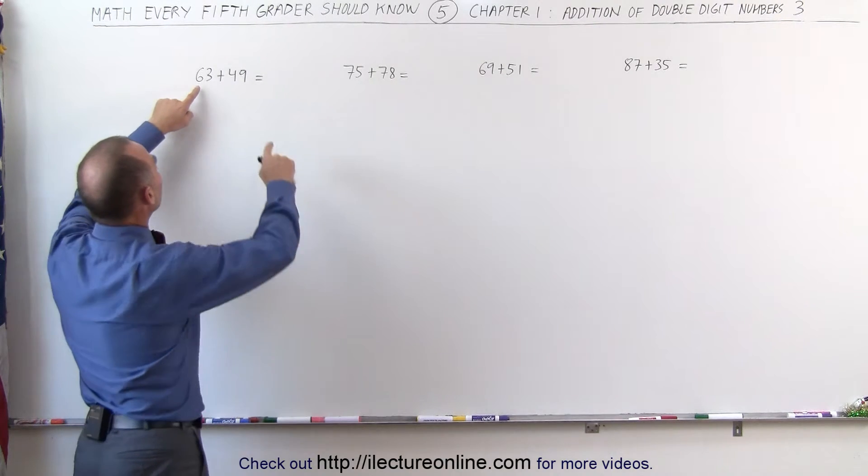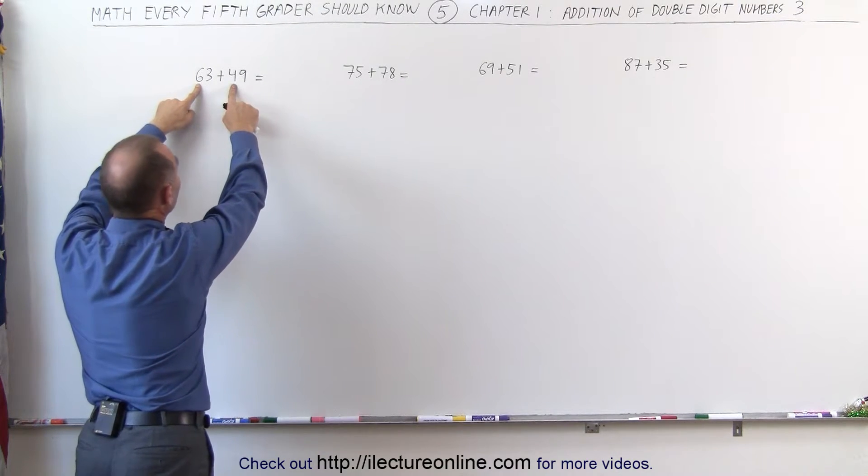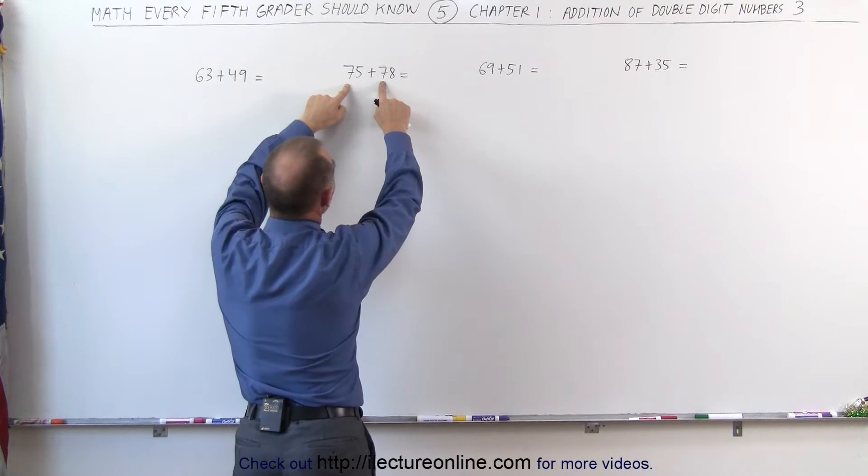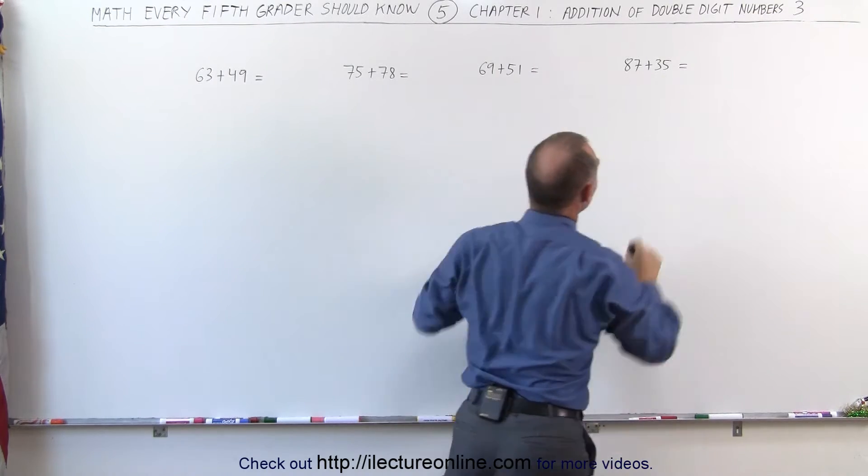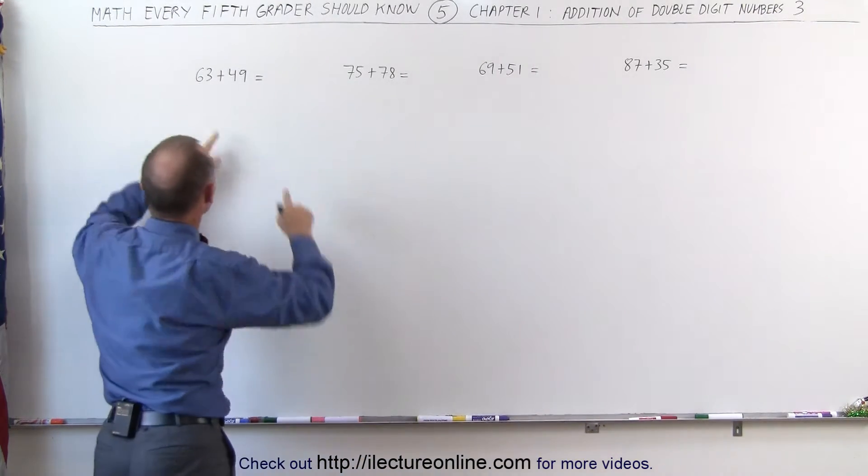In this case, notice that if we add the first two numbers together, it adds up to 10 or more. The first two numbers together here add up to 10 or more. Same over here and same over here. And in the same way, when we add the last two numbers together,